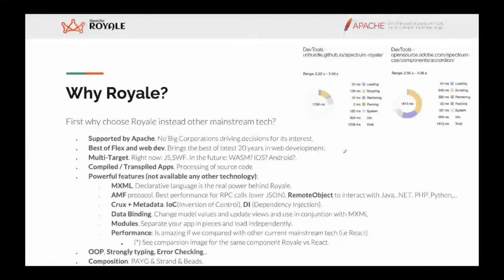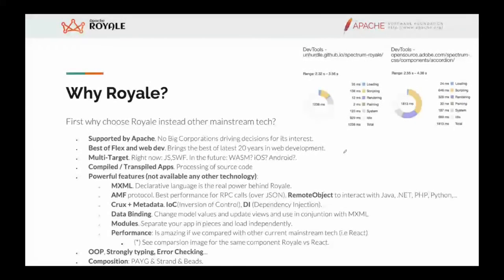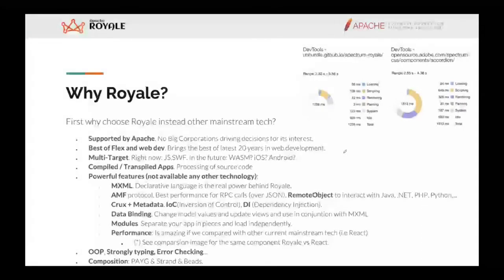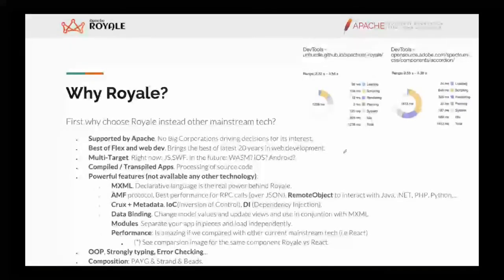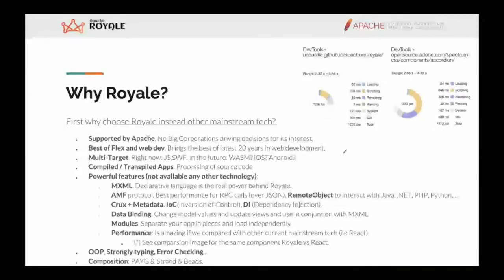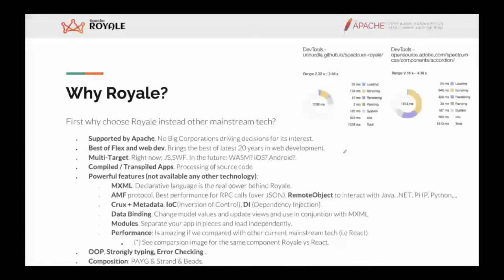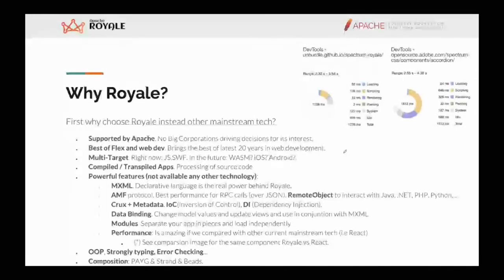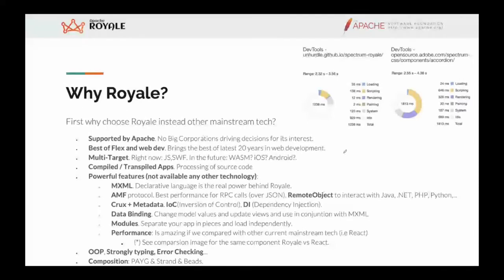Another point is we use source code for programming, then compile and transpile applications, so the source code is not interpreted in the browser. We have very powerful features not available in any other technology. For example, I think the most important is MXML, which is a declarative language we use along with ActionScript 3. Many other platforms try to create something similar - for example, there is JSX in React - but I think MXML is far more powerful than those other solutions.